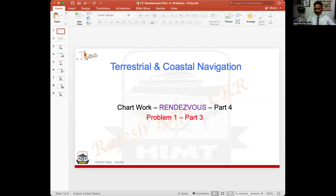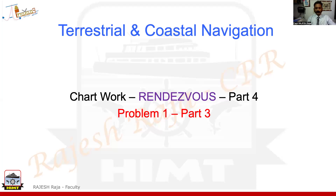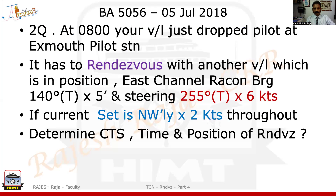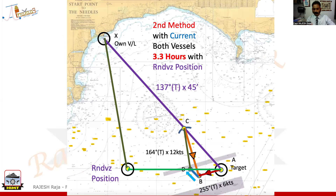I am going to conclude the rendezvous question which I had started. This I will consider as the last part of the whole question. I took a particular problem from your DG Shipping question. As far as the question is concerned, whatever was asked in the problem for BA 5056, we have actually solved whatever answers were required as per the problem given in the exam. But I am going to go a little bit further to tell you what more you can do from the same diagram. In this question it is not needed, but you never know — it may be needed in some other possible question.